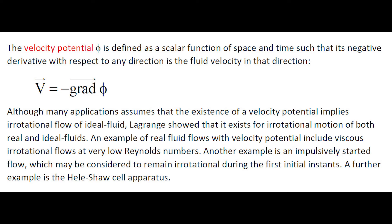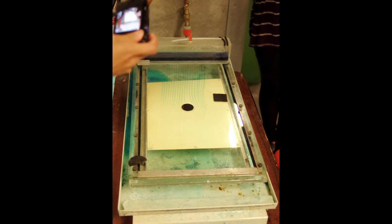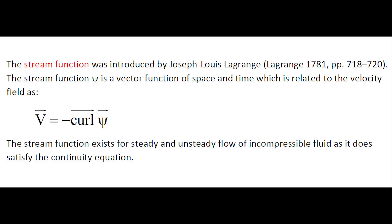Examples of real fluid situations for which a velocity potential exists include irrotational flow at very low Reynolds number and impulsively started flow, demonstrated on the Hele-Shaw apparatus. These two photographs show a Hele-Shaw apparatus and its application to visualize the streamlines around a circular foil. The apparatus consists of two horizontal parallel plates separated by a narrow gap. Any object placed between the plates causes the fluid to deviate in flowing around it, and the dyed portion of the fluid traces out streamlines for two-dimensional potential flow.